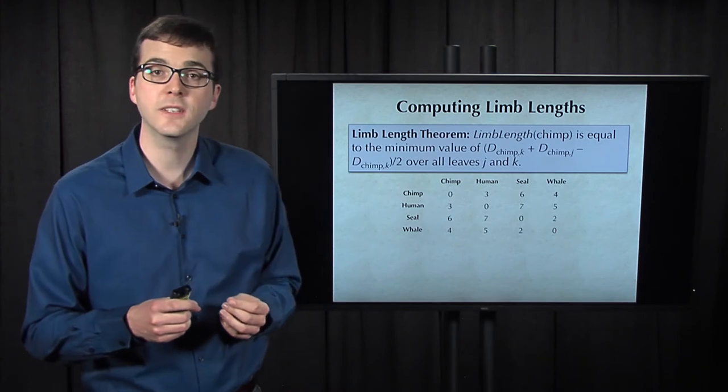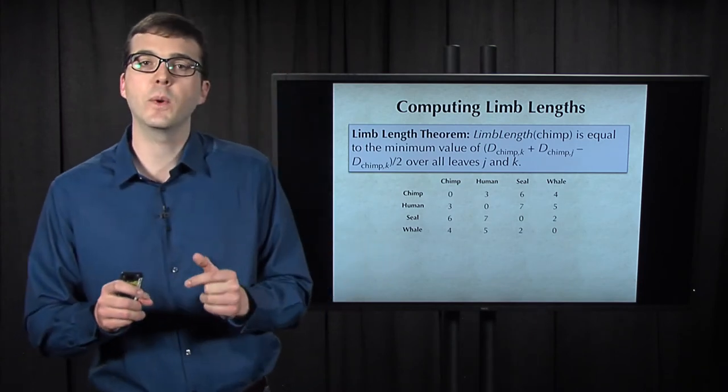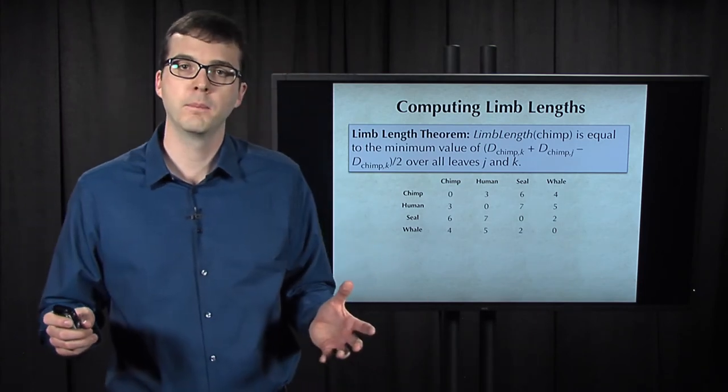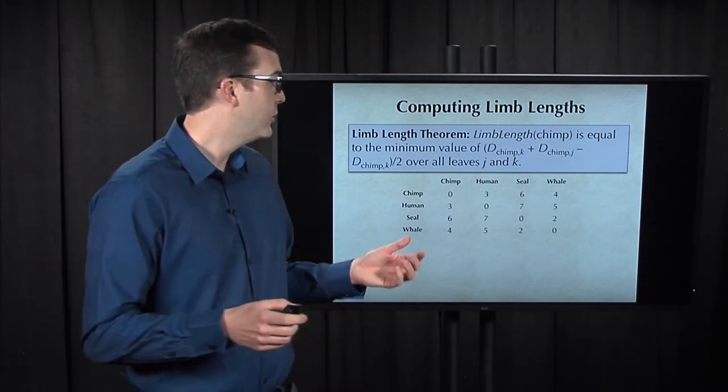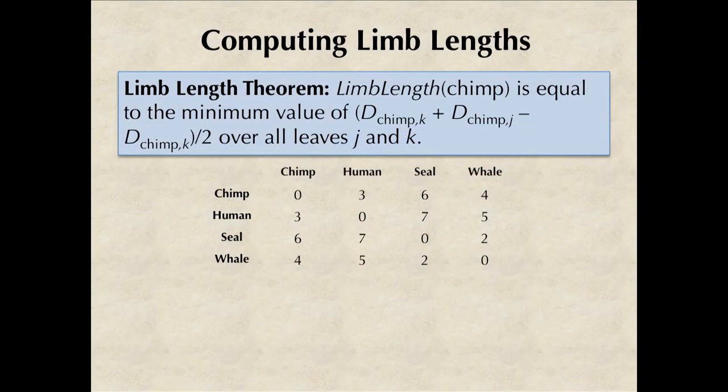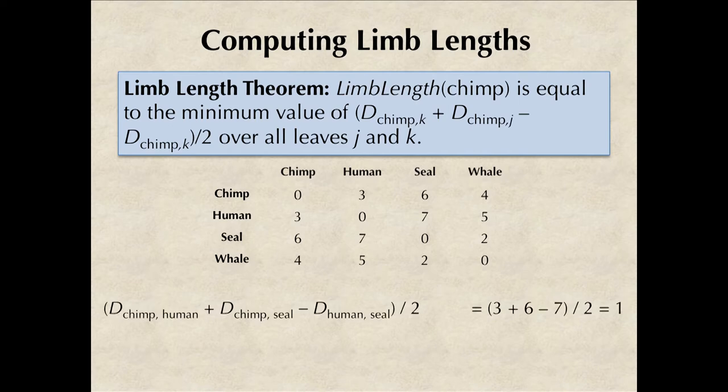When we return to our toy distance matrix, let's pretend that we don't know what the tree looks like. We can substitute chimp for I here in the limb length theorem. Now we just need to compute the formula in the limb length theorem for all other choices of leaves J and K. We can take these leaves to be human and seal, in which case when we plug in the matrix values, we get one.